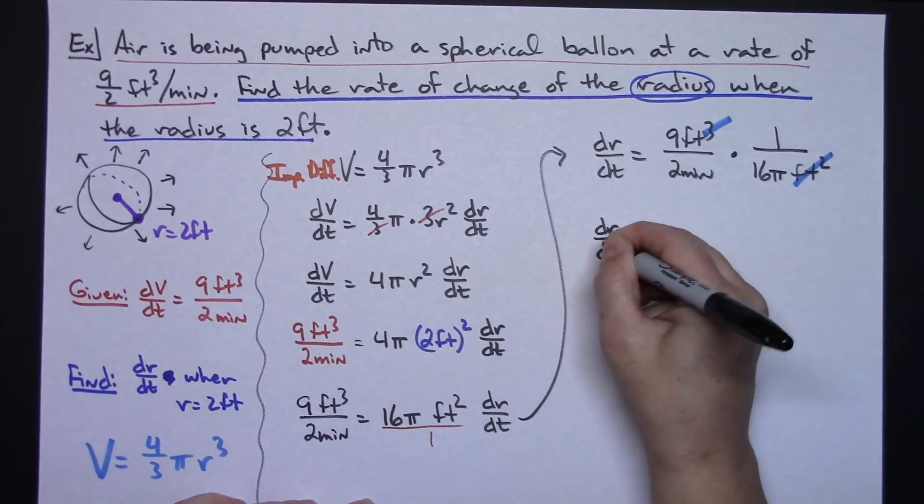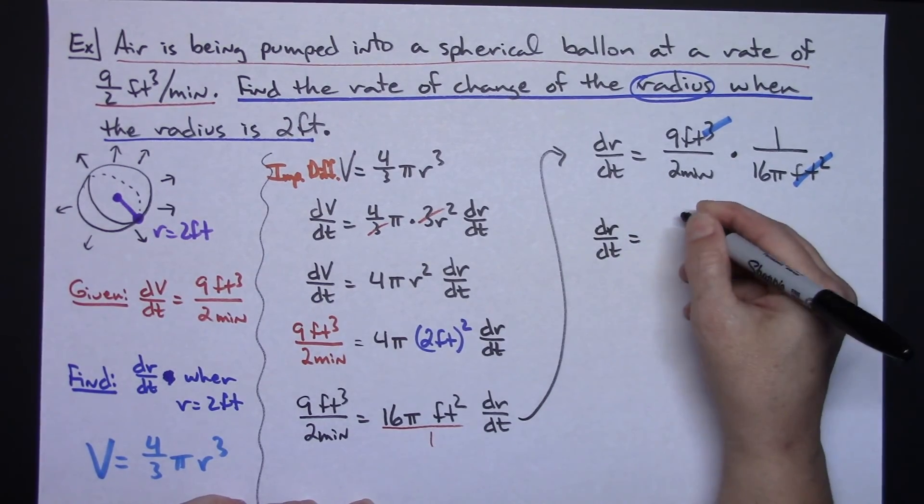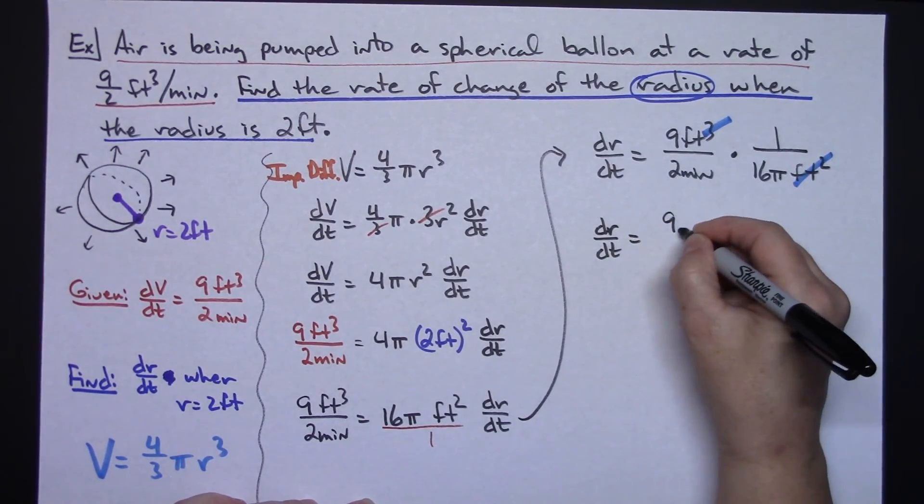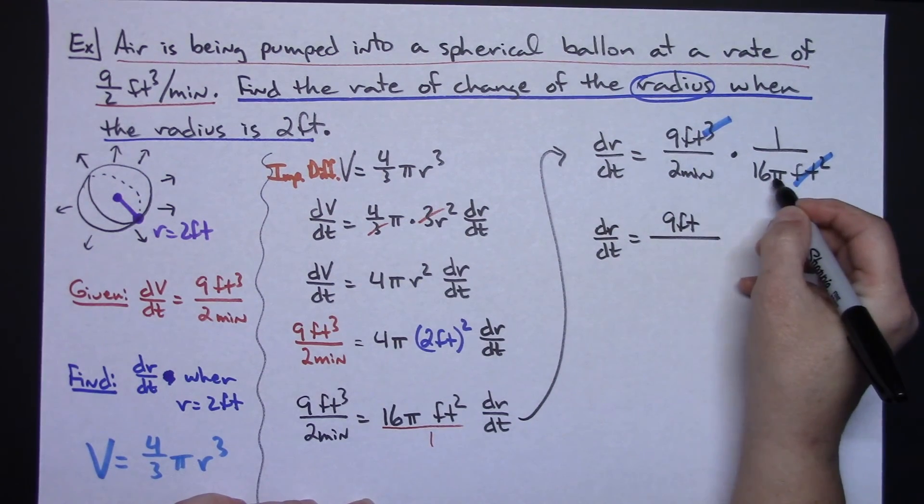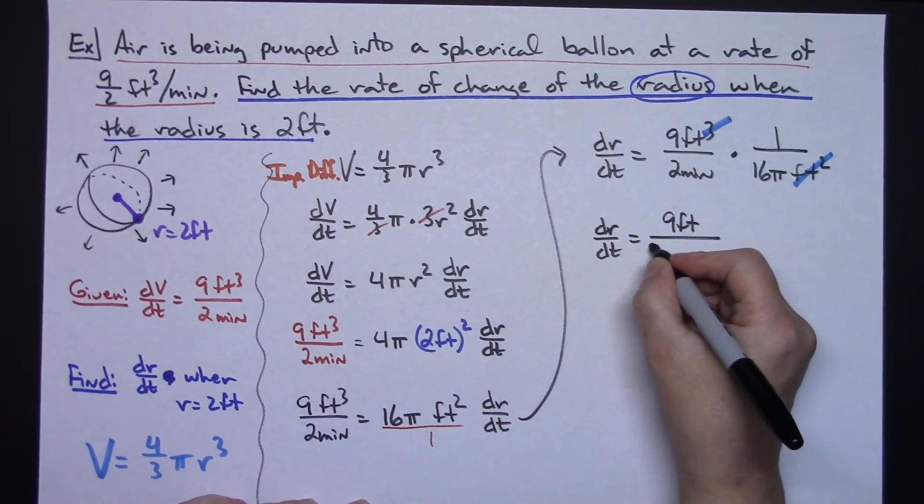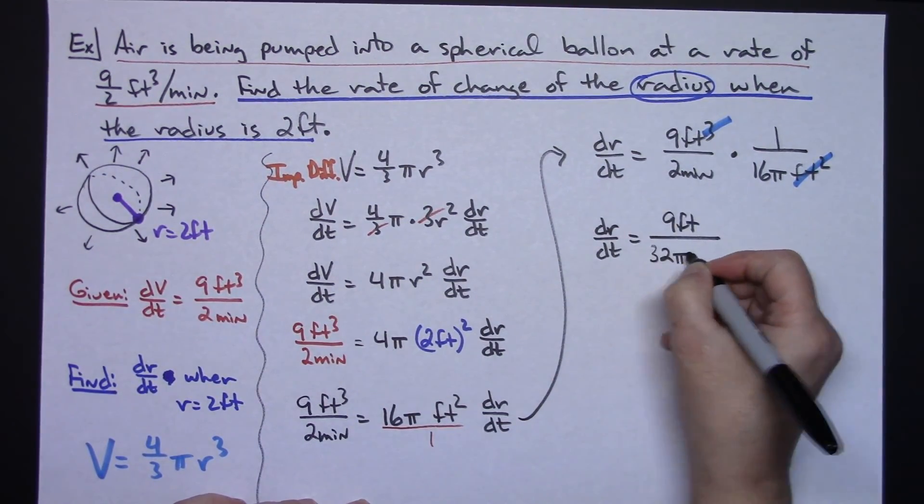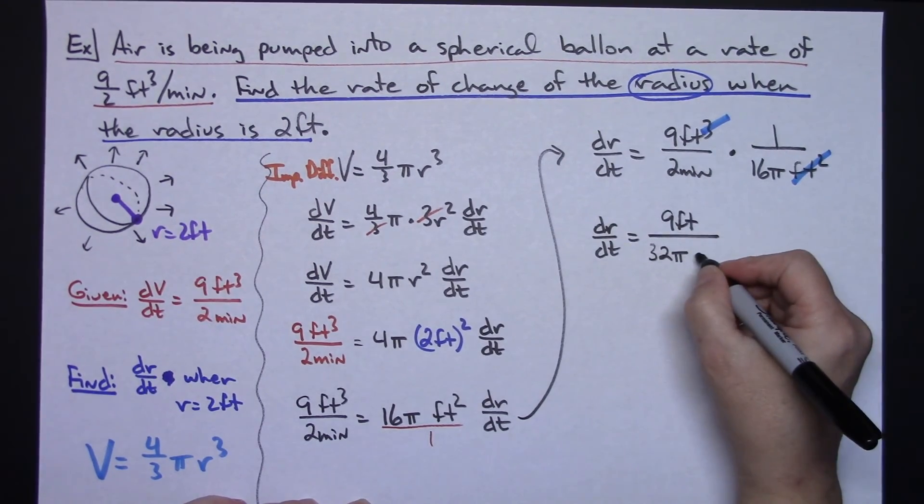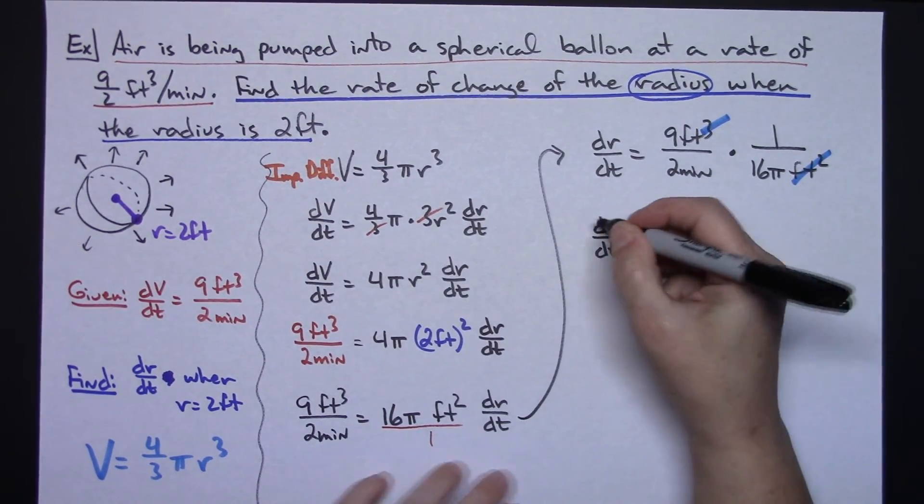So dr/dt is going to be the 9 feet on the top, and 16π times 2 is going to give me a 32. So 32π, and then the label on the bottom is minutes.